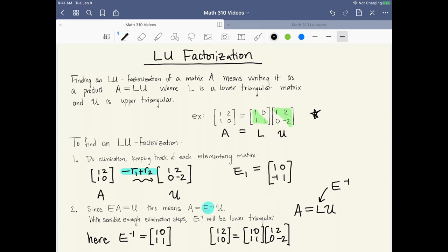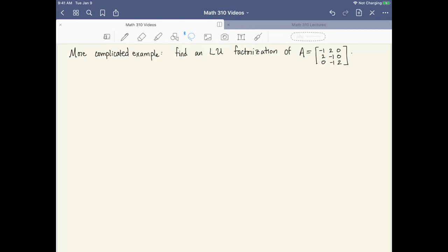Now this example was very simple. There was only one row operation therefore only one elementary matrix and only one thing to invert. Most examples are going to be a bit more complicated than this one. So let's now look at a slightly more complicated example that will involve a couple of elementary matrices.